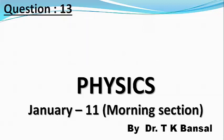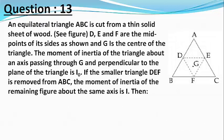Our next question is: an equilateral triangle ABC is cut from a thin solid sheet of wood as shown in the figure. D, E and F are the midpoints of its sides as shown and G is the center of the triangle. The moment of inertia of the triangle about an axis passing through G and perpendicular to the plane of the triangle is I0.